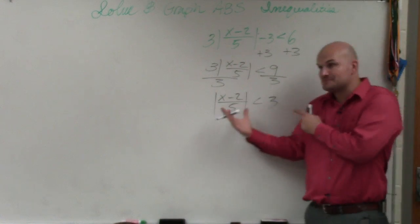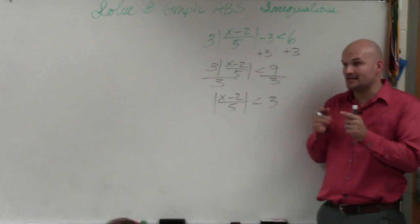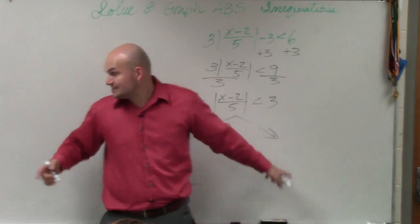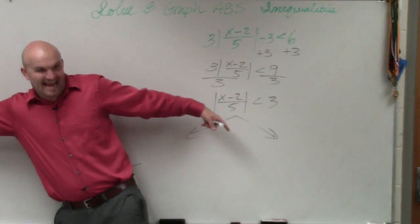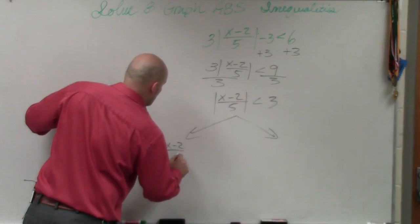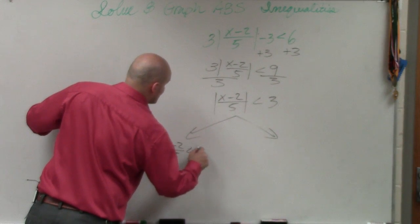Now my absolute value is isolated. So now I can separate using my two cases. It's a less than, so that's going to make it an AND inequality. So I'd have x minus 2 over 5 is less than 3.